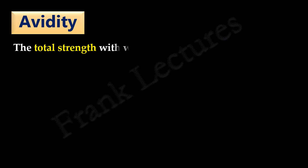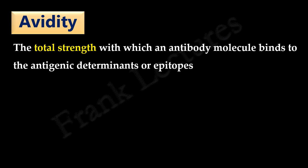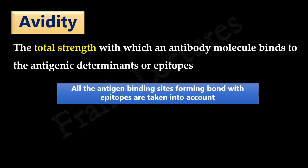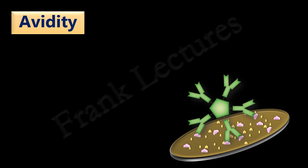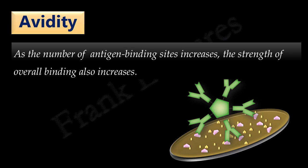Avidity is defined as the total strength with which an antibody molecule binds to antigenic determinants or epitopes, involving all the antigen binding sites of the antibody. For example, immunoglobulin G and E have two antigen binding sites since these are monomers. Immunoglobulin A is found as monomer, dimer, and trimer, so it has two, four, and six antigen binding sites respectively. Immunoglobulin M has a maximum of ten antigen binding sites. As you can see, IgM binds to the antigen at multiple epitopes. As the number of antigen binding sites increases, the strength of overall binding also increases. The dissociation of antigen from antibody requires all the bonds to be broken simultaneously, so avidity provides a more stable antigen-antibody complex.